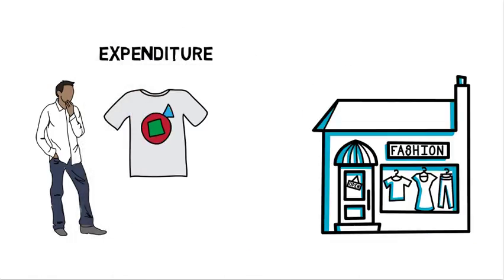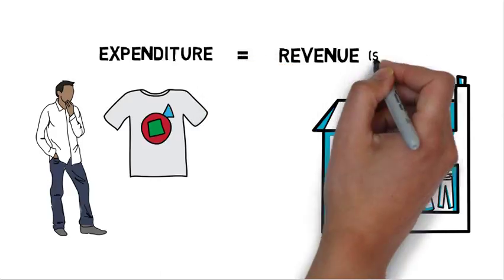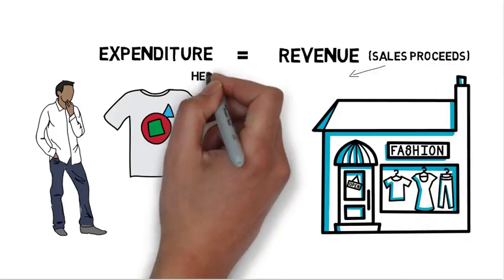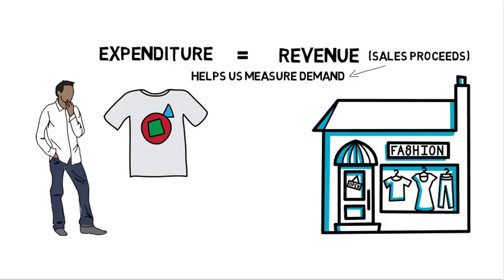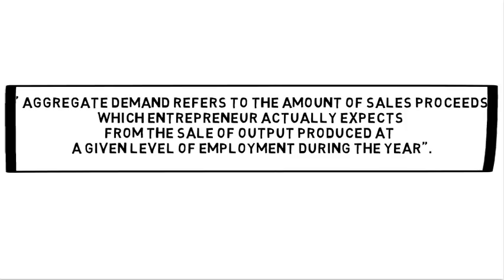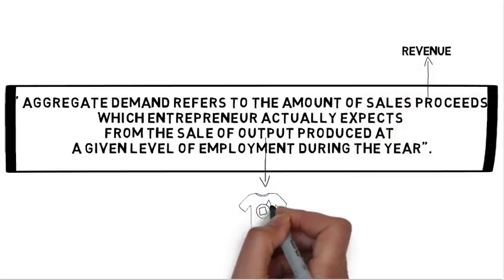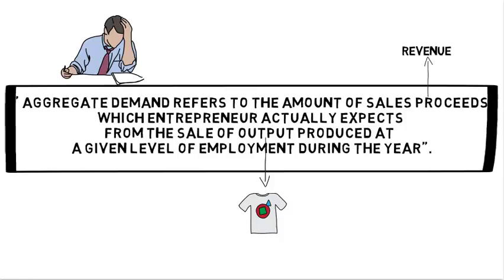Whatever expenditure you do is the revenue for the entrepreneur. Hence, your expenditure and the revenue that the entrepreneur earns are one and the same. Let us call the revenue that the entrepreneur earns as the sales proceeds. So this way we can say that the sales proceeds is a good way of measuring demand, and that is exactly what the definition tells us — that aggregate demand is nothing but the sales proceeds or the revenue that the entrepreneur expects from the sale of output produced at a certain level of employment in a particular year.